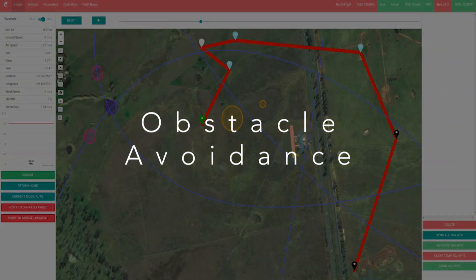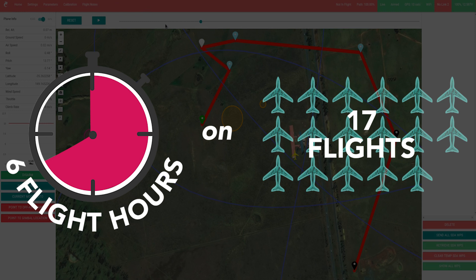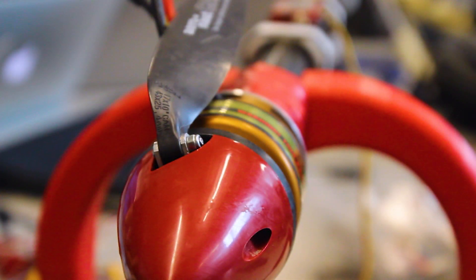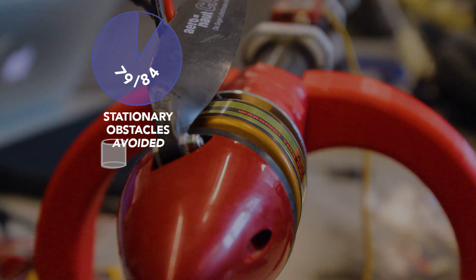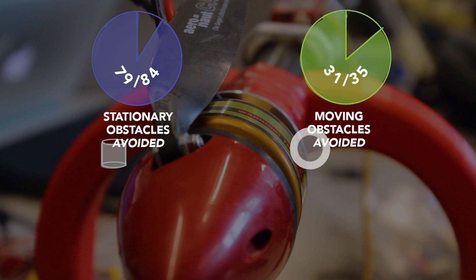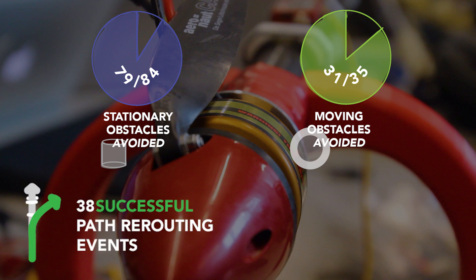Thea 2's new and improved obstacle avoidance system has been used on a total of 6 flight hours on 17 different flights. As with the waypoint navigation algorithm, the obstacle avoidance system was tested in both a flight simulator and on the Bixler-3 before integration into Thea 2. On Thea 2, we tested the obstacle avoidance system on a total of 84 static obstacles with 79 avoided, and tested on a total of 35 moving obstacles with 31 avoided. In these flights, the obstacle avoidance system has conducted 38 successful flight path rerouting events. After simulating the same flight with last year's obstacle avoidance system, the new system prevented 32 unnecessary waypoint routing events.